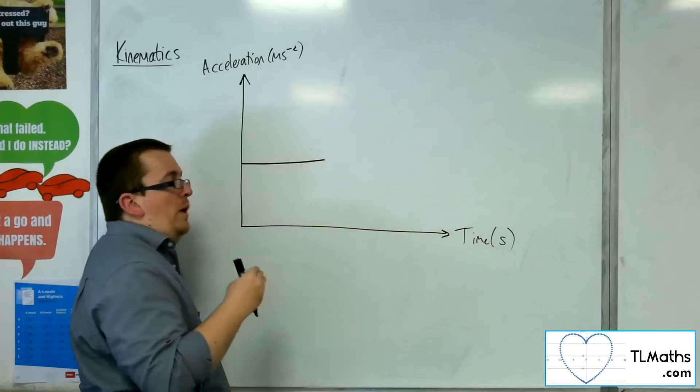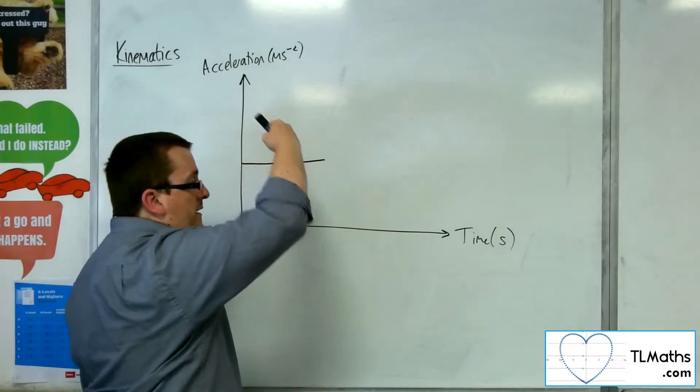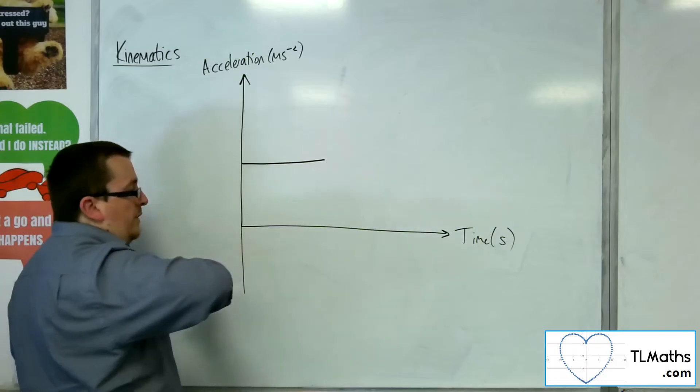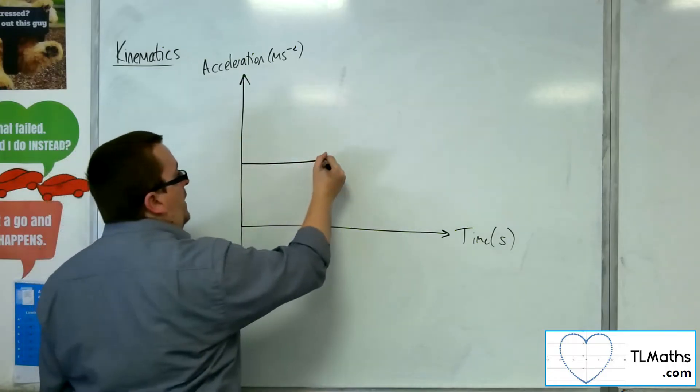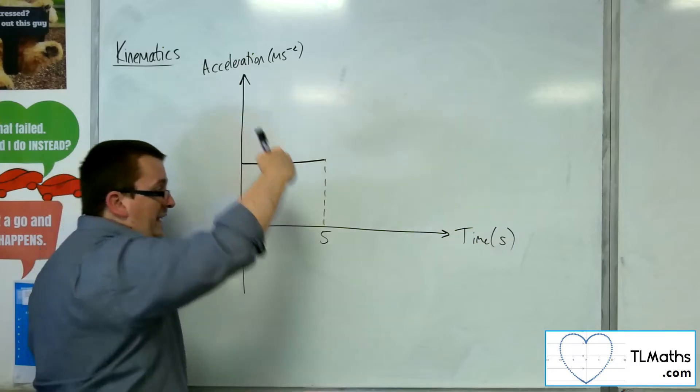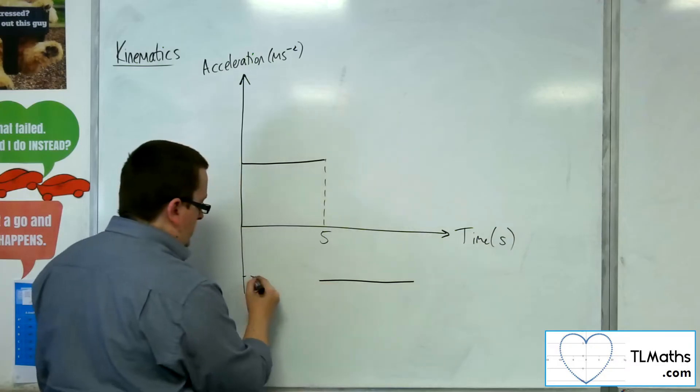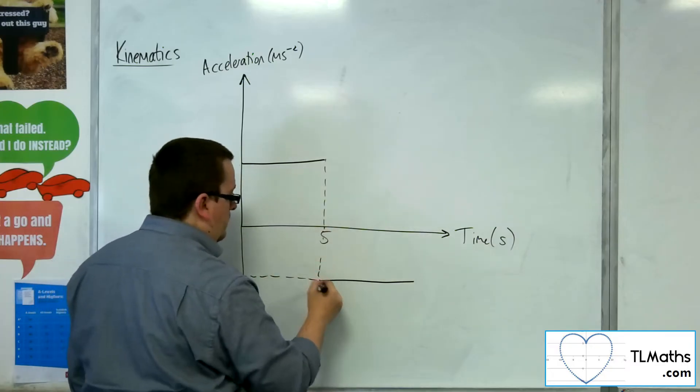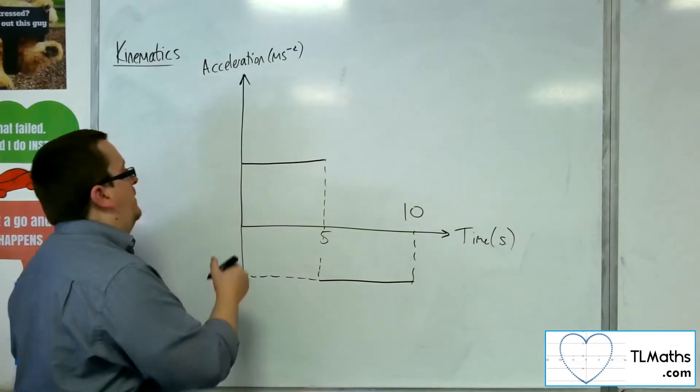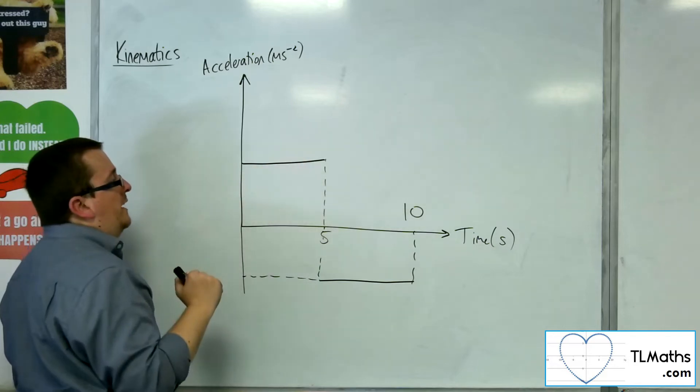For graphs where the velocity-time graph would go something like this, and then something like this, then what you can find is that the velocity going like that for the first five seconds, and then it decreases. You've got like this jagged section. Maybe it increases its velocity in the first five seconds.